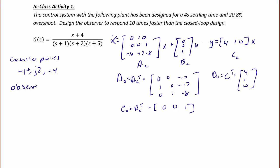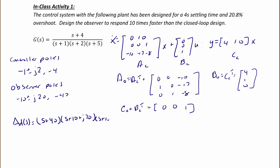Since the observer has to be 10 times faster, the observer poles are -10 ± j20 and -40. From here we derive the desired characteristic equation: delta_D(s) equals (s + 40)(s + 10 + j20)(s + 10 - j20), which equals s³ + 60s² + 1300s + 20,000.